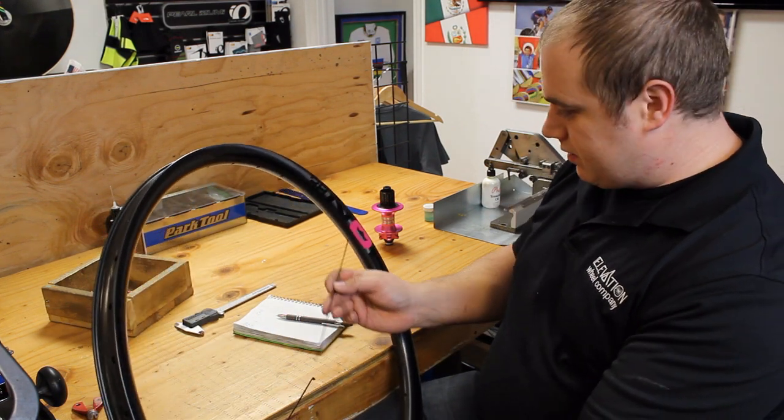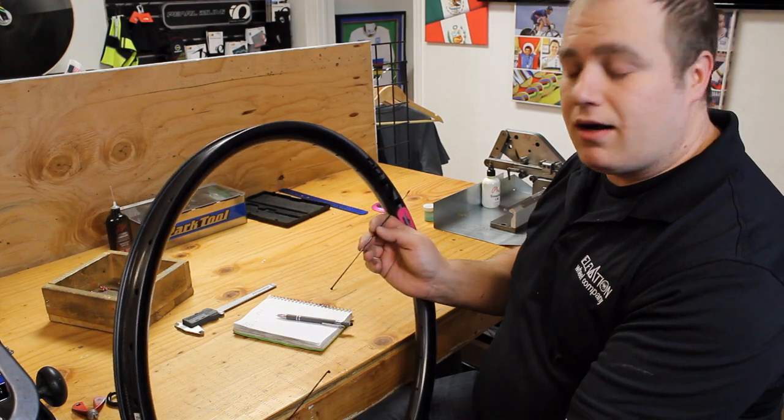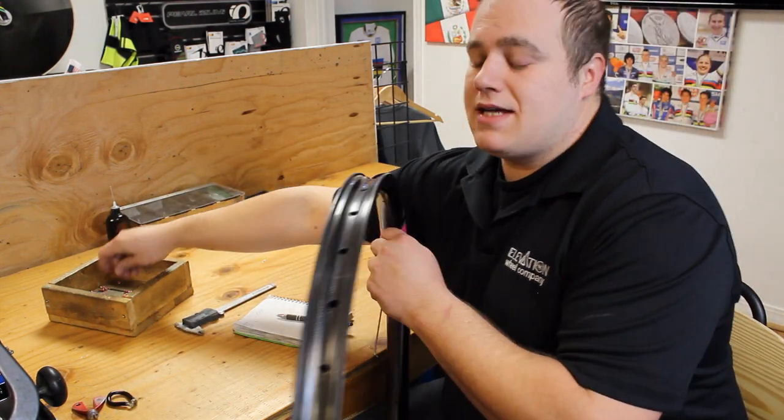Take the other spoke, put it directly across from the one at the valve hole, and do the same thing.